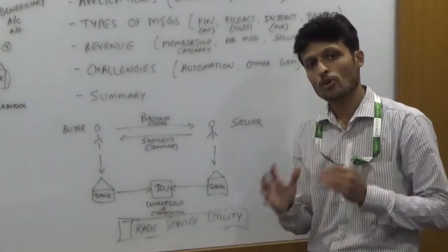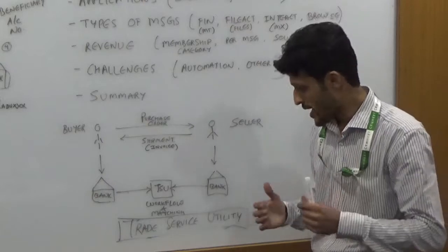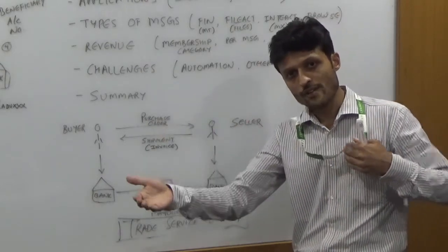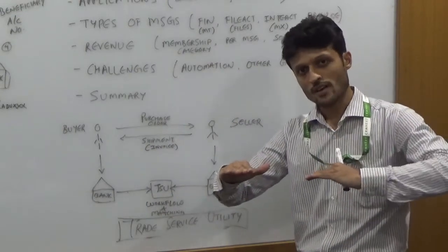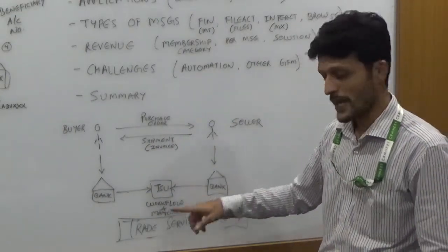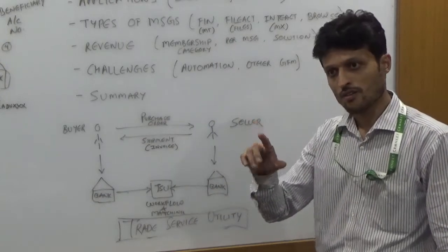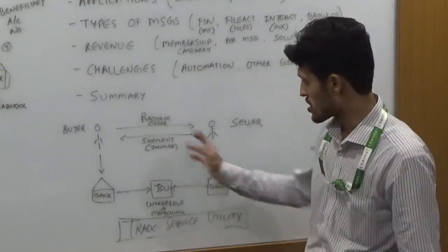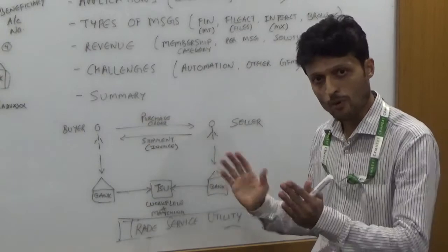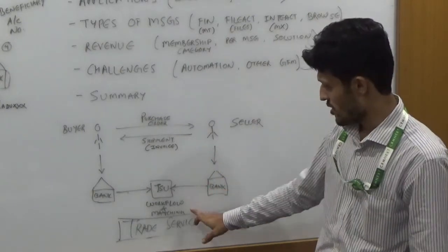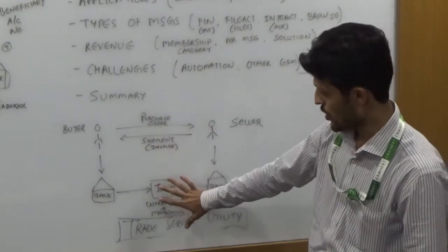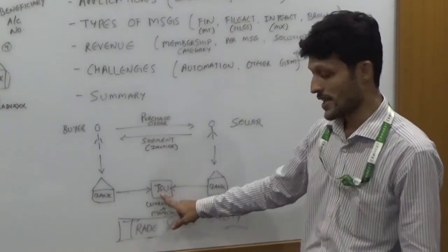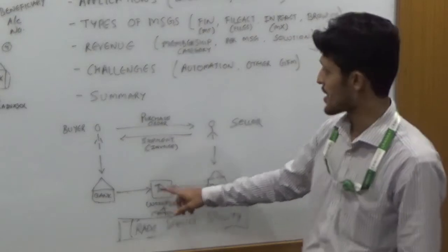The same details of the shipment have been sent to the trade service utility. Here the trade service utility plays a very important role by making a matching mechanism of what is being received, what has been sent, what has been requested, what has been received. This kind of mechanism makes it very correct and direct for both the parties agreed upon for trading. This is one application example provided by the SWIFT network.